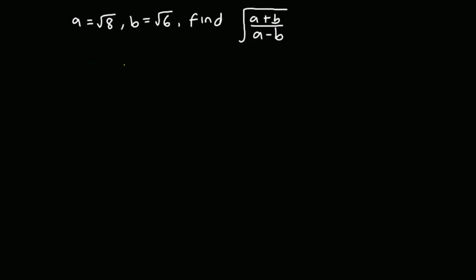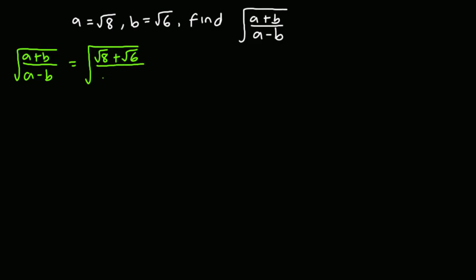To do that I'm going to substitute, so square root of (a + b) all divided by (a − b) is given as square root of (√8 + √6) all divided by (√8 − √6). So if we have something like this,